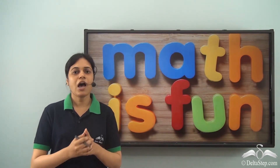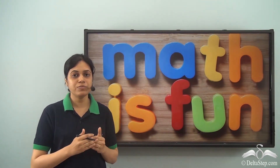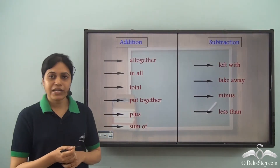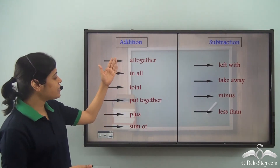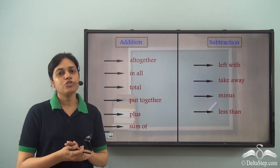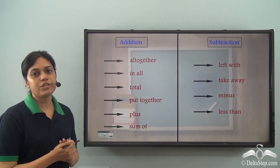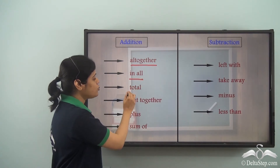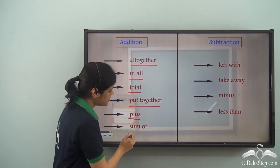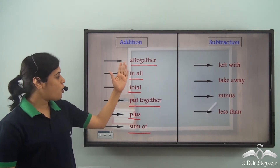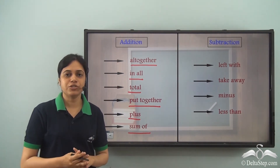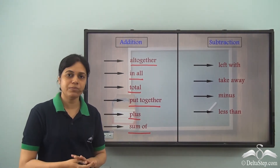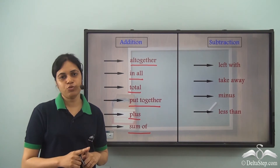We have already seen how we can solve problems using addition and subtraction, and we have also seen that there are several names of addition. In some problems you may find the terms: all together, in all, total, put together, plus, sum of. All these words indicate addition. So whenever you see these in a word problem, it means you need to add the two quantities.